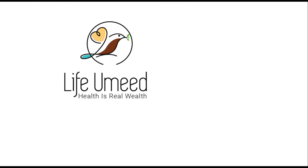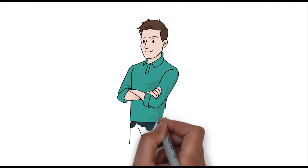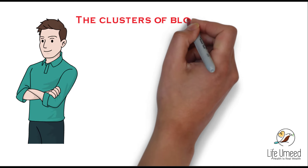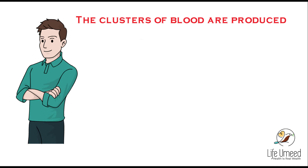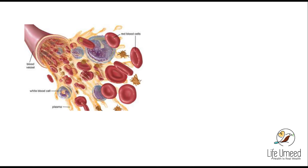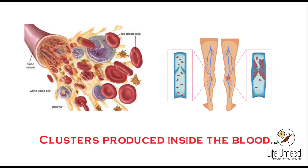Blood clots in legs. Welcome to Life for Mead. There are numerous places inside the human body where the thrombus or clusters of blood are produced. The location inside the human body where clusters of blood are produced influences the complexity of those clusters produced in the blood. Formation of a clot of blood in the legs is known as deep vein thrombosis.